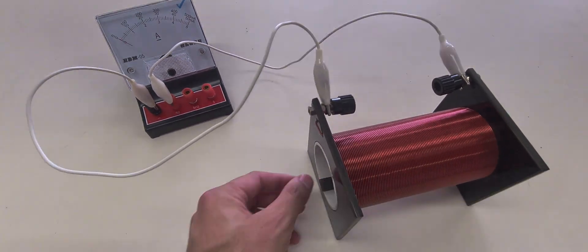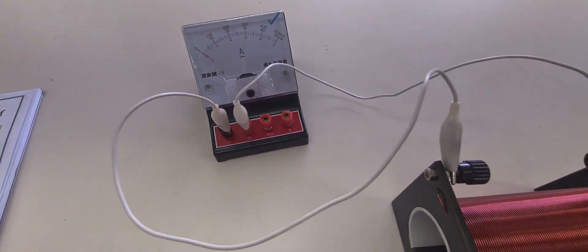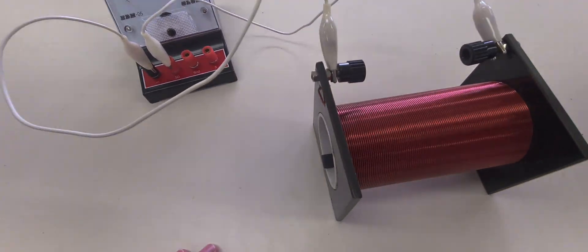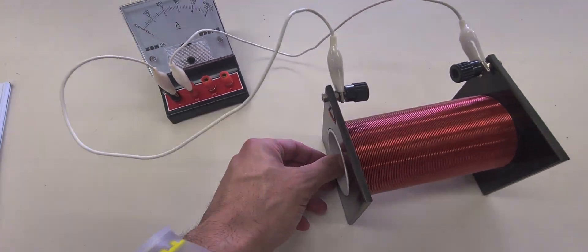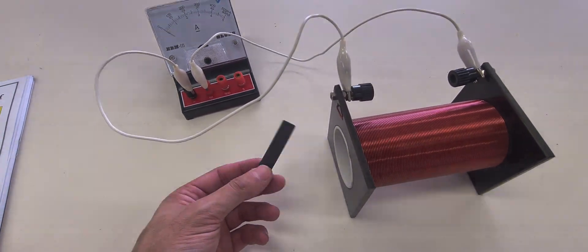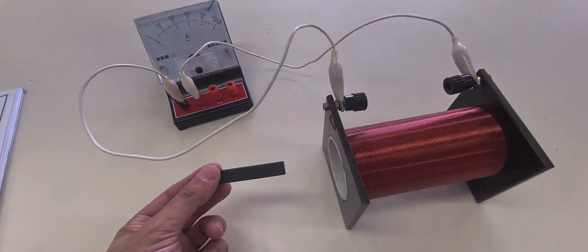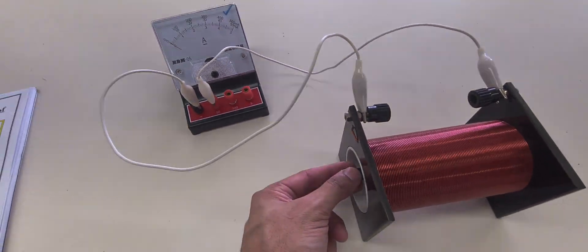If I just leave the bar magnet inside, there'll be no current. The reason is because Faraday's law of induction requires there to be a changing magnetic flux. And in order to have a changing magnetic flux, you have to have motion between the magnet and the coil.